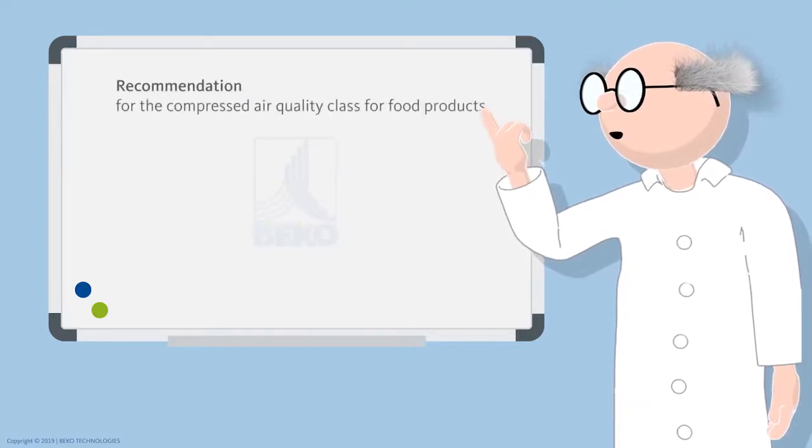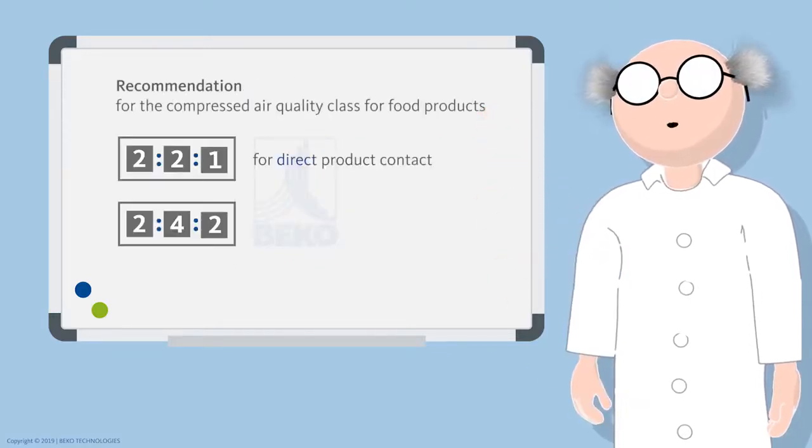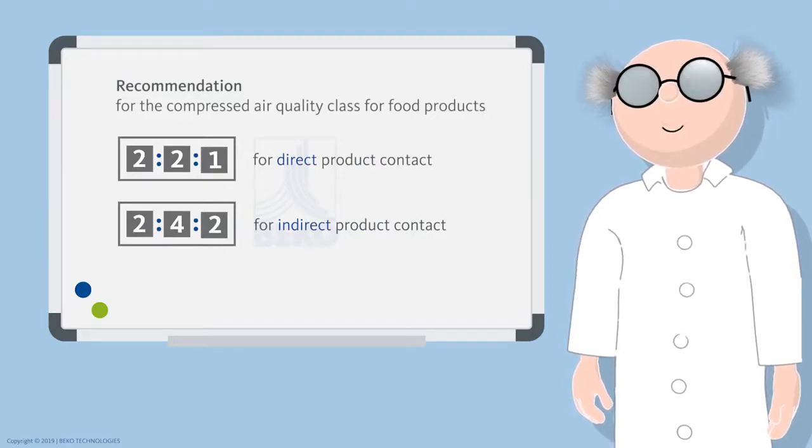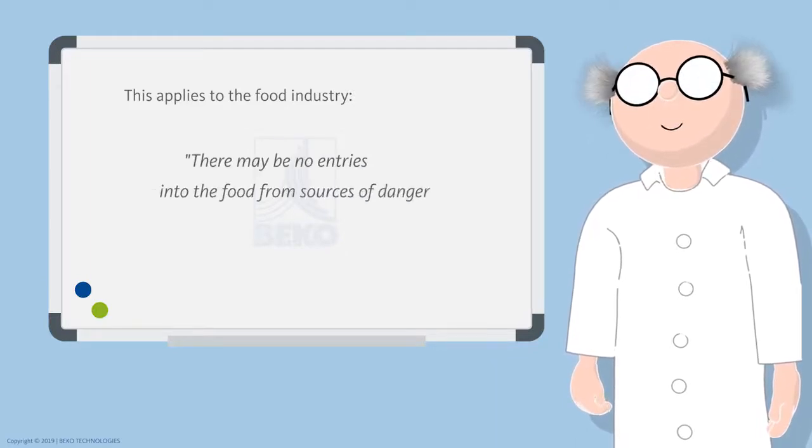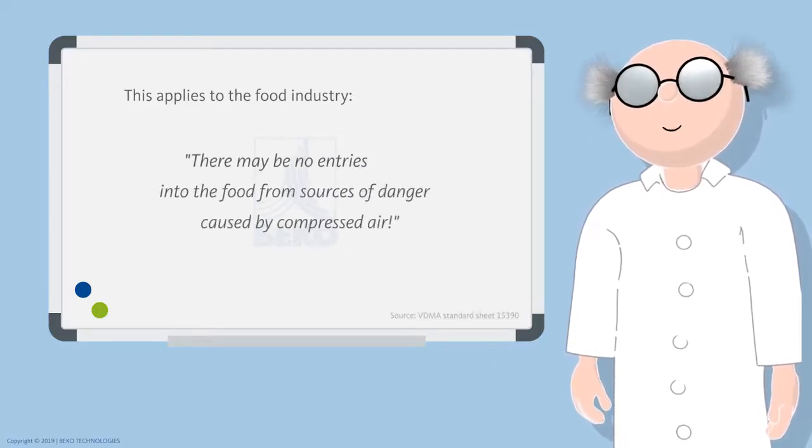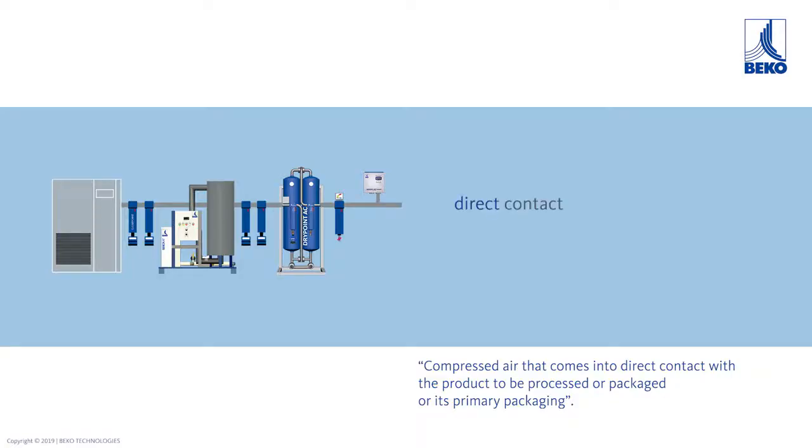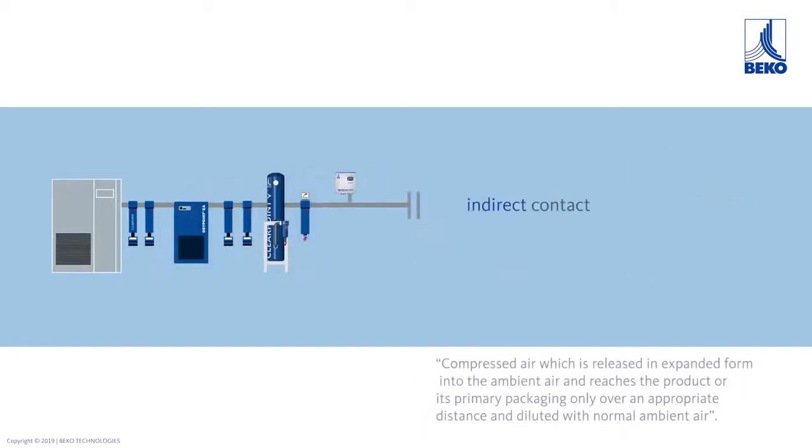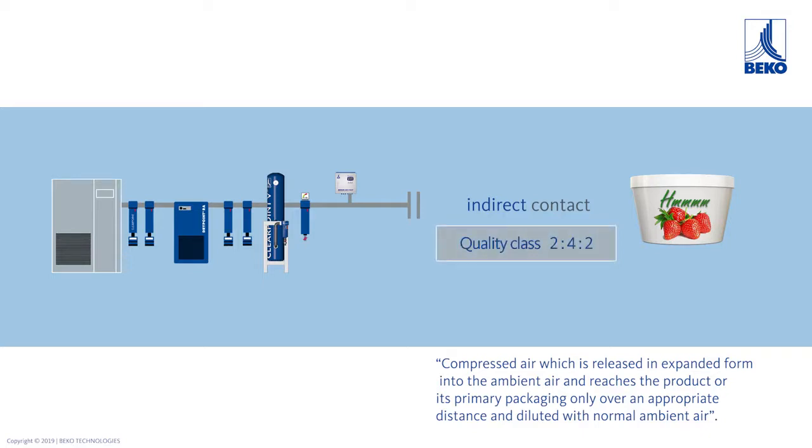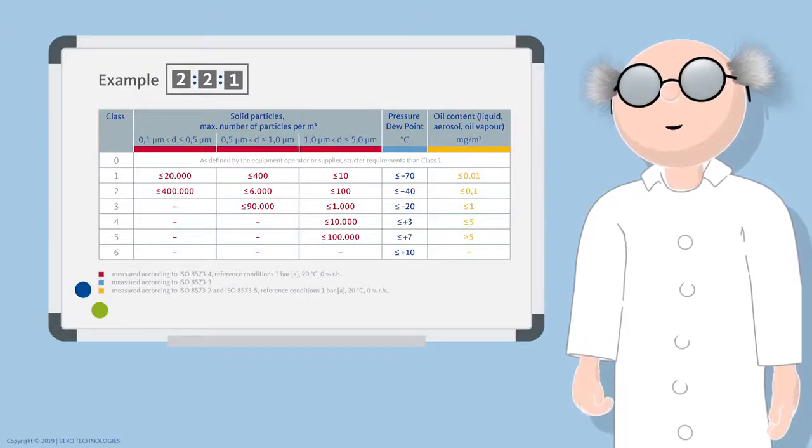Depending on the required quality class, an appropriate treatment of the compressed air is necessary. This applies to the food industry: there may be no entries into the food from sources of danger by compressed air. In case of direct contact between product and compressed air, the quality class 221 is recommended. In the case of indirect contact, the recommendation for the compressed air quality is class 242.